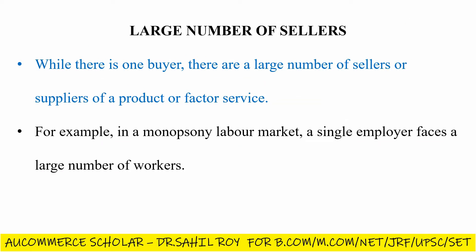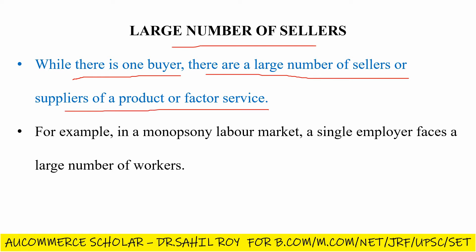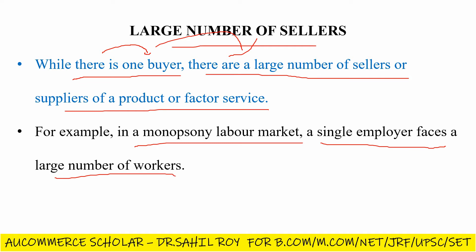The second feature is large number of sellers. While there is one buyer, there are a large number of sellers or suppliers of a product or factor service. Because there is only one buyer, there are many sellers. There are a large number of sellers or suppliers of that product or factor service. For example, in a monopsony labor market, a single employer faces a large number of workers.